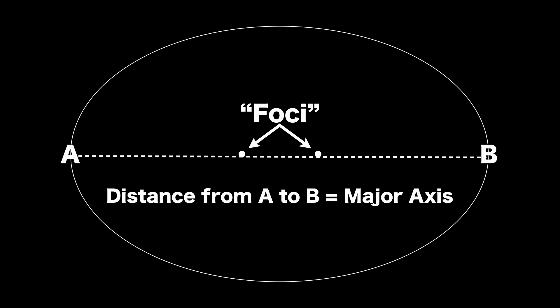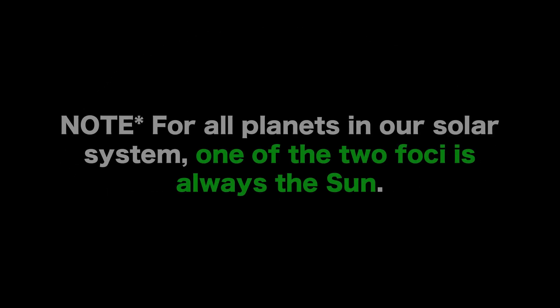So what you're going to do is you're going to measure the distance between your two focal points. You're going to divide that by the length of your major axis. Just a quick note regarding our Sun. Our Sun is always going to be one of the focal points within an ellipse. You don't have to worry about the second focal point. That's just going to be an arbitrary spot in the orbit.